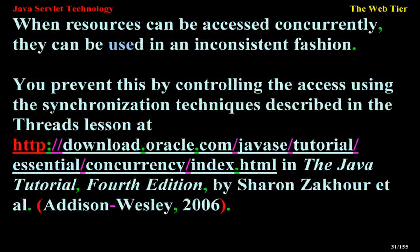A web container will typically create a thread to handle each request. To ensure that a servlet instance handles only one request at a time, a servlet can implement the single-thread model interface. If a servlet implements this interface, no two threads will execute concurrently in the servlet's service method. A web container can implement this guarantee by synchronizing access to a single instance of the servlet or by maintaining a pool of web component instances and dispatching each new request to a free instance. This interface does not prevent synchronization problems that result from web components accessing shared resources such as static class variables or external objects. When resources can be accessed concurrently, they can be used in an inconsistent fashion. You prevent this by controlling access using the synchronization techniques described in the Threads lesson in the Java tutorial.